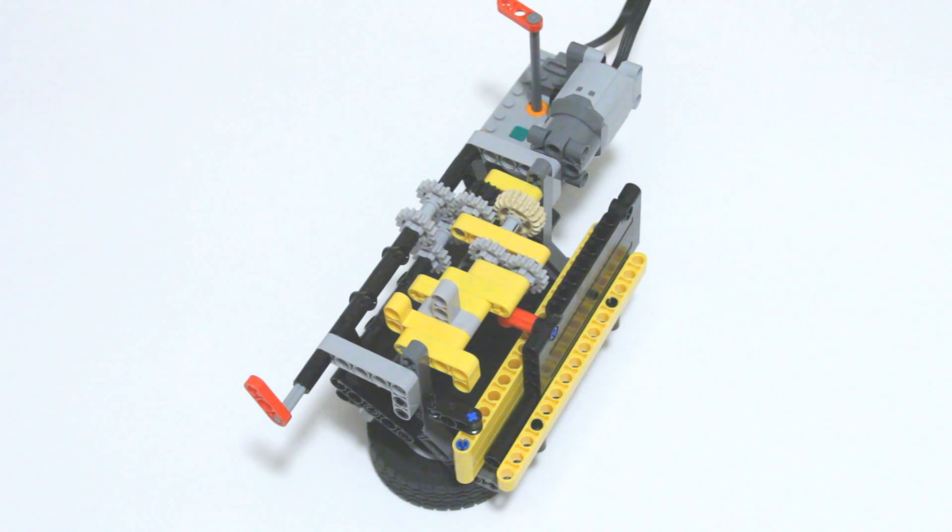Now within the Armatron toy from the 1980s, there are actually six of these gearboxes involved, and they actually controlled six different functions, but they were all driven by one motor. Now I've got some links in the description of the video if you want to learn a little bit more about the inner workings of the Armatron toy.